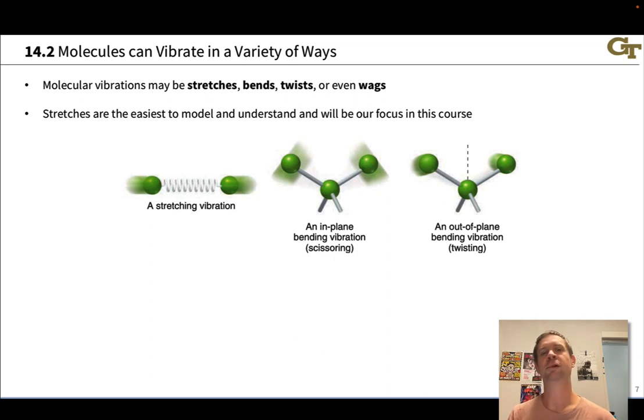Molecules can vibrate in a variety of ways. We'll primarily be focused on what are called stretches, which corresponds to a bond vibrating or stretching like a spring. But bonds can also bend, they can twist, and they can wag. You'll also see these kinds of motions in infrared spectra.